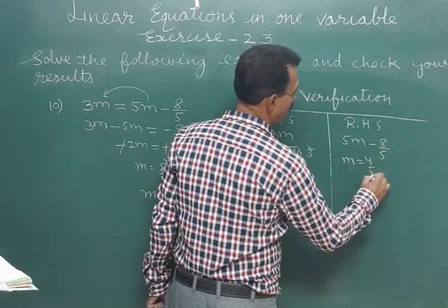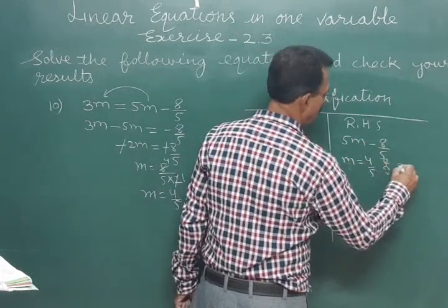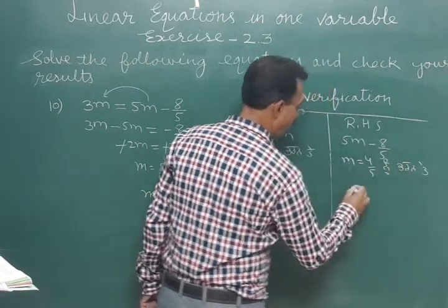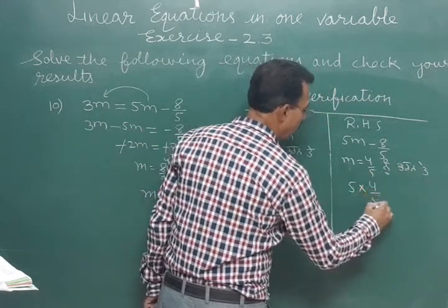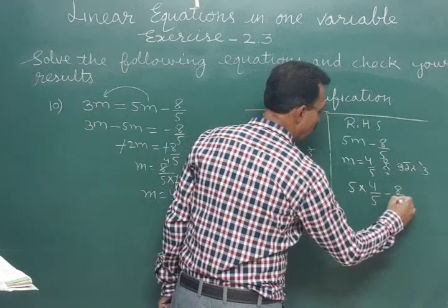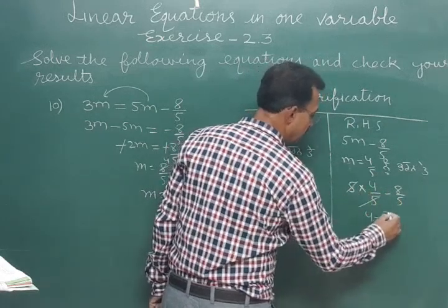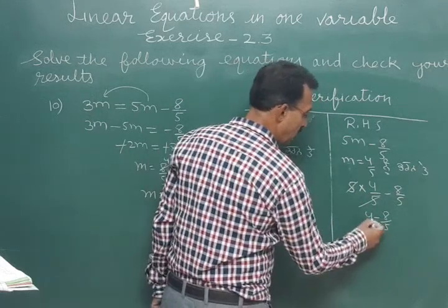Now let's check the right hand side. So 5 into m, that's 5 into 4 upon 5 minus 8 upon 5. So that's 4 minus 8 upon 5. 4 into 5 is 20.